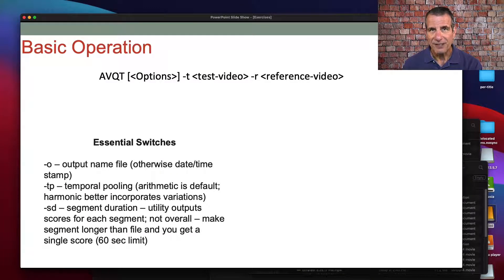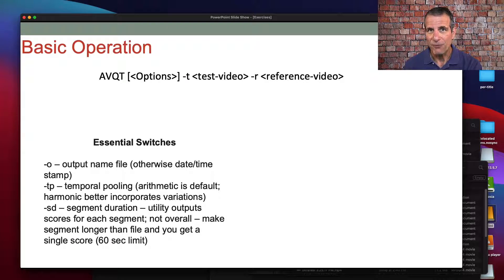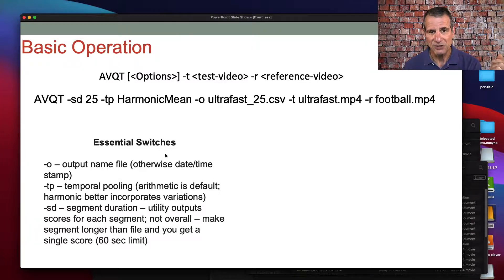Segment duration is a somewhat unusual feature. The utility doesn't give you a single score for the entire file — it gives you a score for each segment. If you don't put the switch in, it assumes a six-second segment. So for a 20-second file, you're going to get four separate scores, not a summary. You can set the segment duration anywhere from one to 60. The test files we're working with are 20 seconds, so I'll set it to 25 to get one score. I'm not really sure what Apple was thinking, but you can spoof the system with shorter files using this switch.